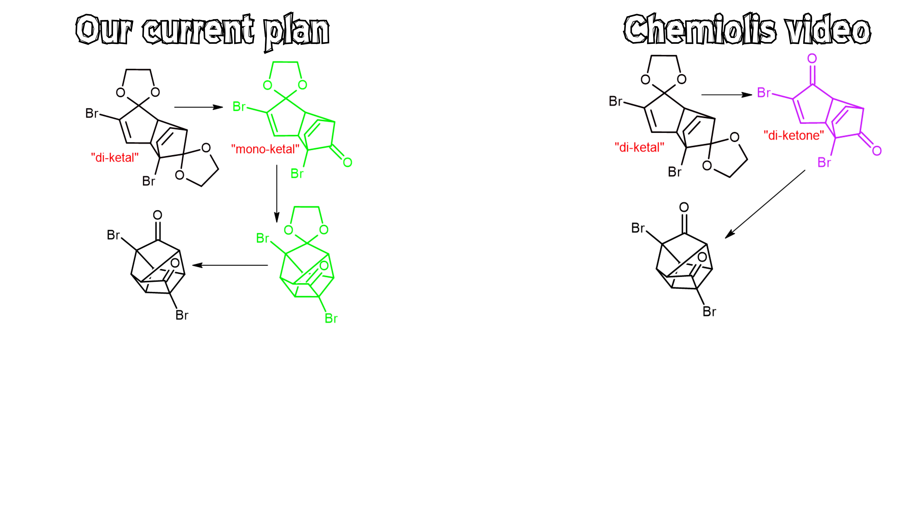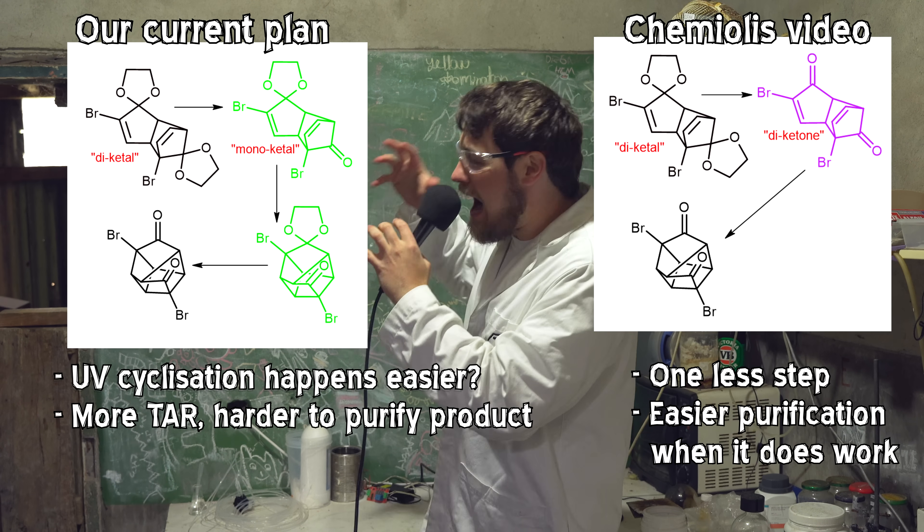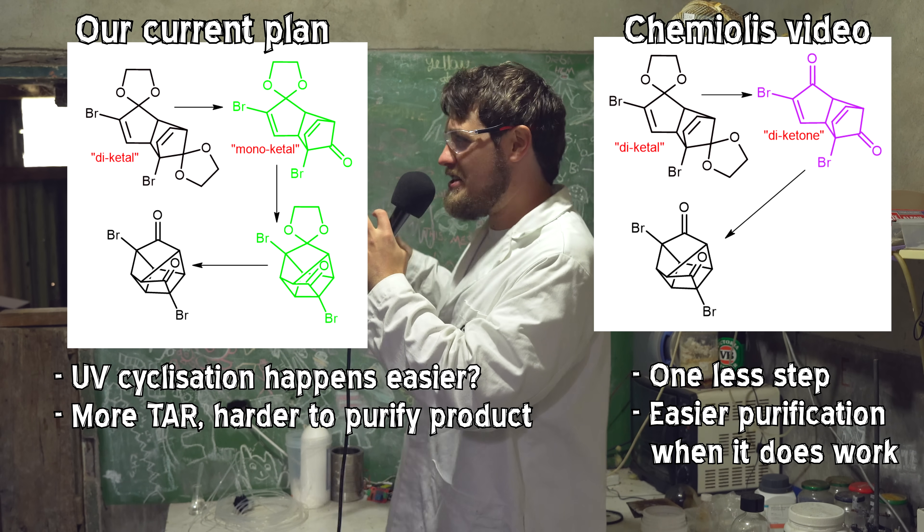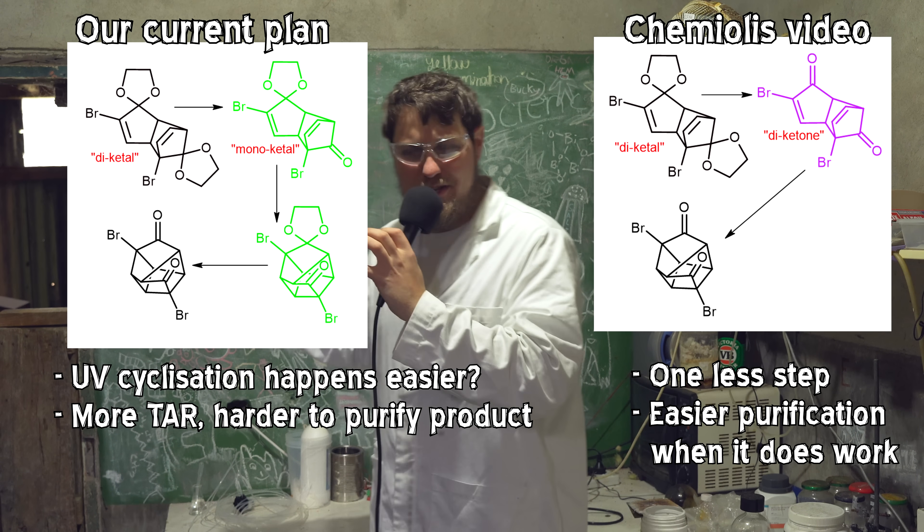On paper, there are pros and cons for both sides. And the reason we are doing the one protecting group off first is because it was said that this molecule underwent cyclization in the photochemistry step better. And that was identified as a hard step. The more efficient we could make that step, the better. However, the catch then, after the photochemistry step, this molecule is very hard to purify.